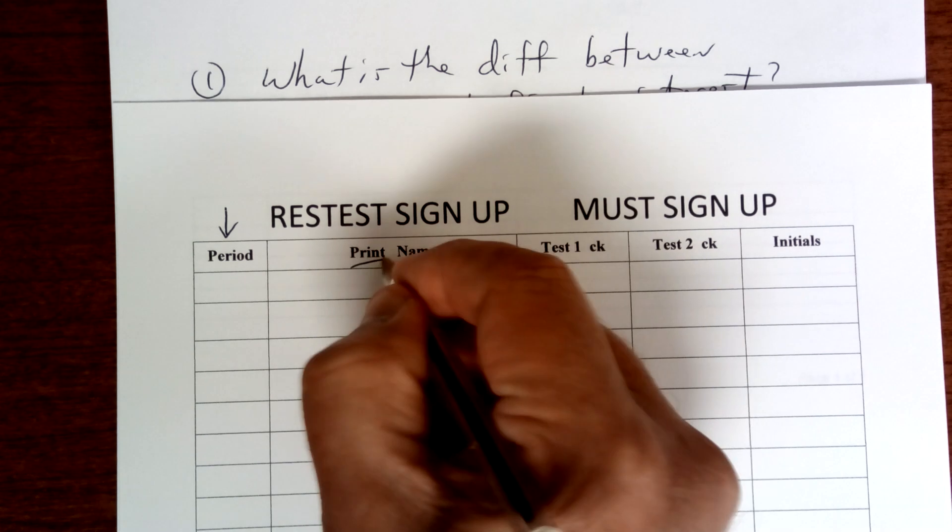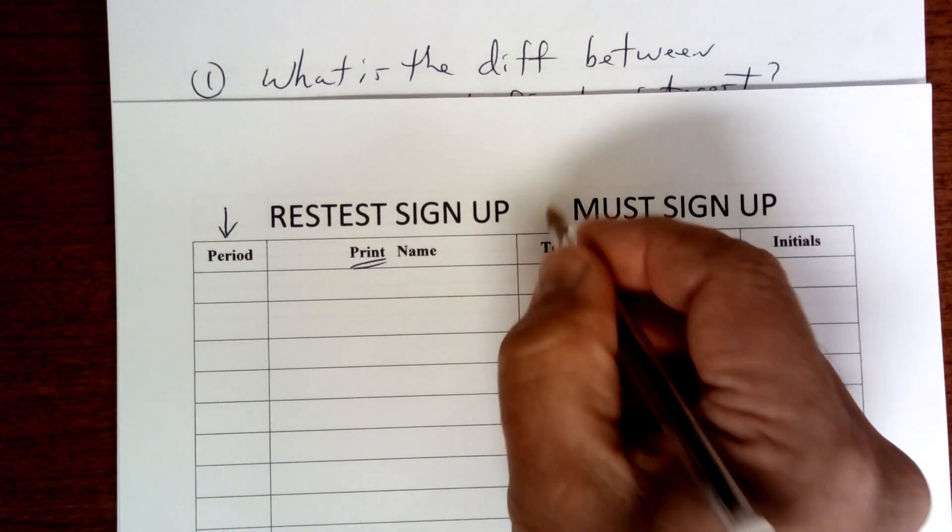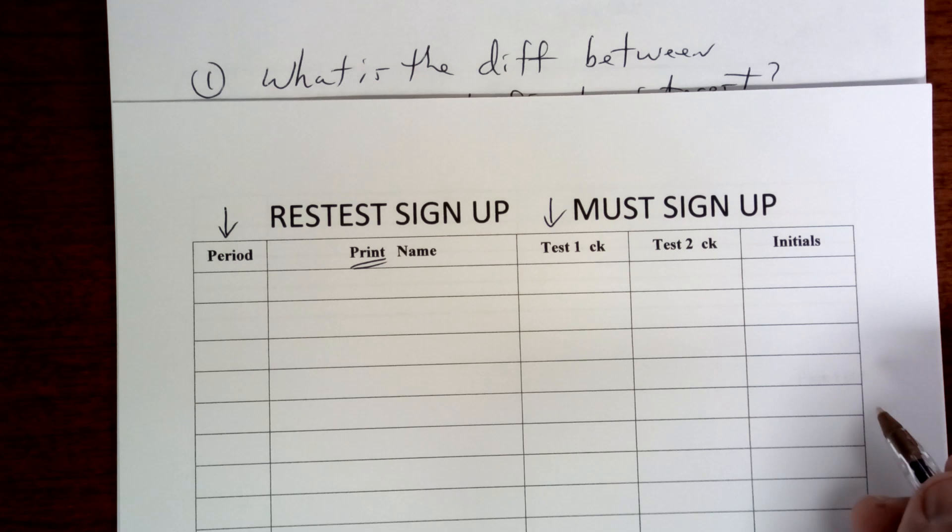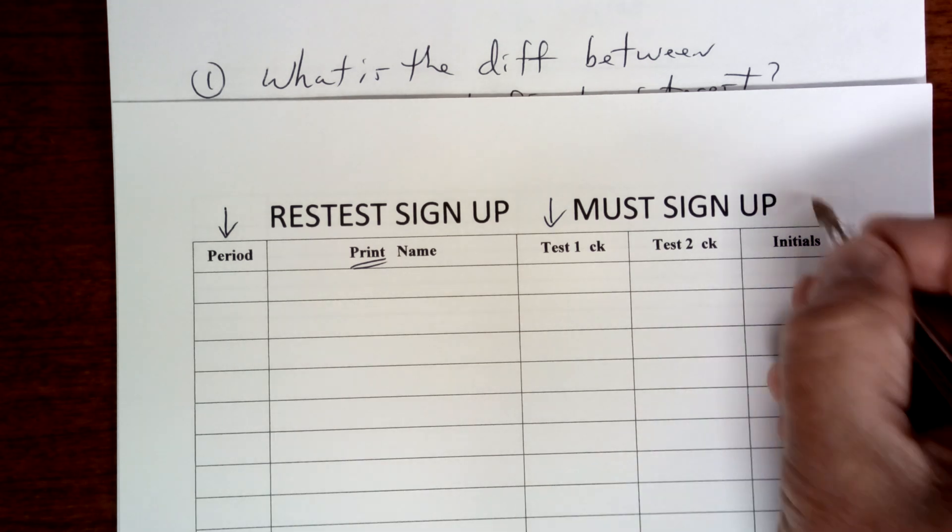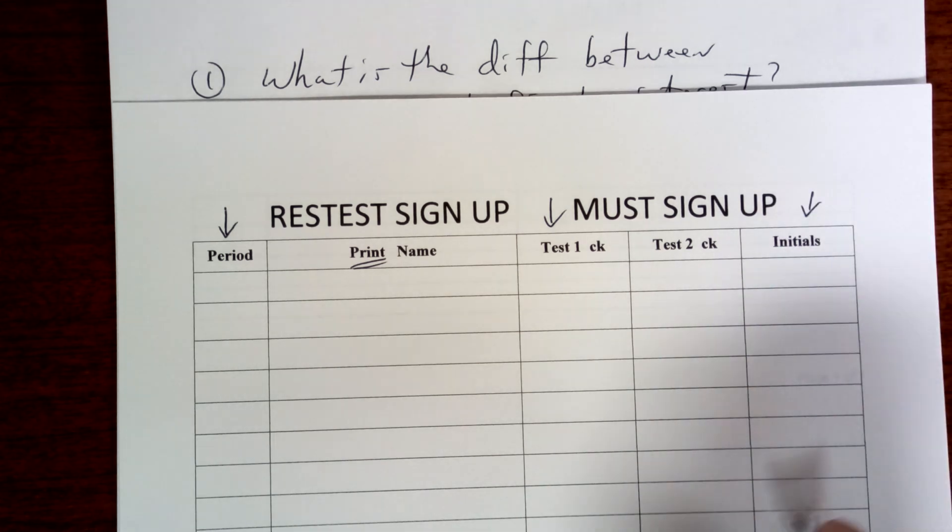So make sure you put the period, print your name - you need to be able to read it - test number one, that's the only one you're going to be able to make up, and then initial it. Test number two, given this weekend, you're not going to be able to make that one up. Don't miss it.